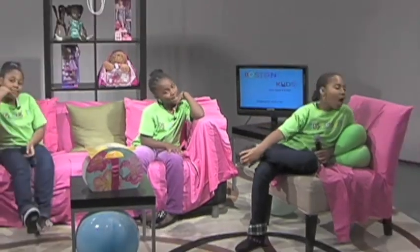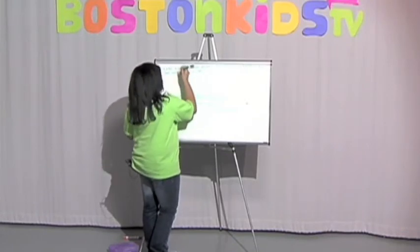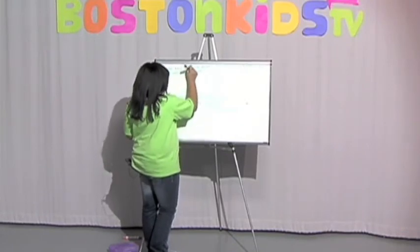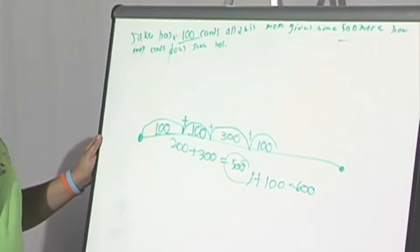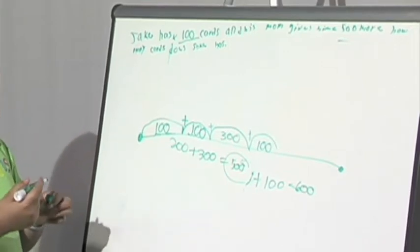Because if his mom gives him 500 and plus 100, it equals 600. So, he has 600 cards.